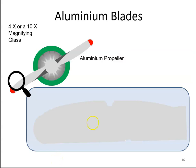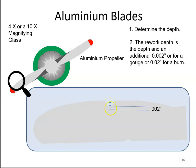Here's an example and here's the gouge. I've made it big just for an example. But the first thing we want to do is measure the depth of it. Once we determine the depth, we then add on an additional two thousandths of an inch.